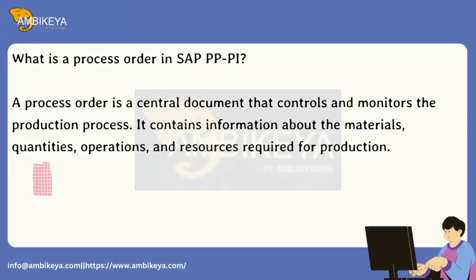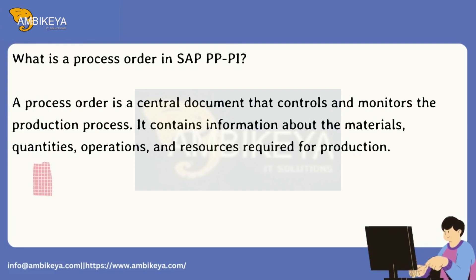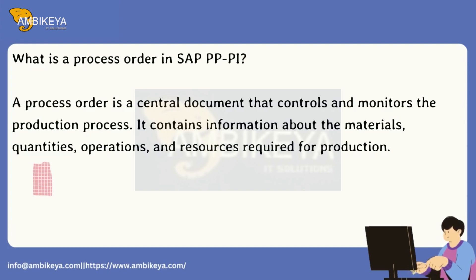What is a process order in SAP PP-PI? A process order is a central document that controls and monitors the production process. It contains information about the materials, quantities, operations, and resources required for production.